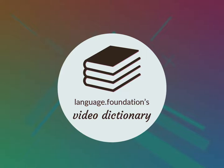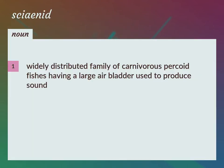Language.Foundation's Video Dictionary, helping you achieve understanding. Sciaenid fish: a widely distributed family of carnivorous percoid fishes having a large air bladder used to produce sound.